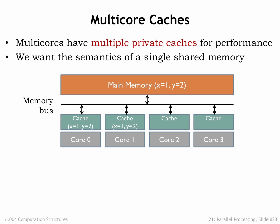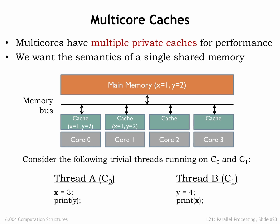Our goal is that each core should share the contents of main memory — in other words, changes made by any one core should be visible to all other cores. In the example shown here, core 0 is running thread A and core 1 is running thread B. Both threads reference two shared memory locations holding the values for the variables X and Y. The current values of X and Y are 1 and 2 respectively.